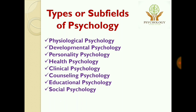The next field is social psychology. Social psychology studies the effect of society on the thoughts, feelings, and actions of people. Social and environmental factors affect the way we think, say, and do. Social psychologists conduct experiments to determine the effect of various groups, group pressures, and influence on behavior.